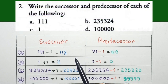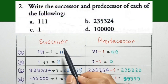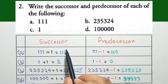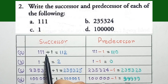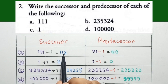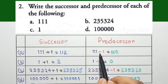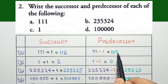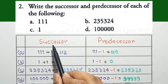Question 2: Write the successor and predecessor of each of the following. For the successor, we just add plus 1 to the number and that total value will be the successor. And for the predecessor, we subtract minus 1, and the resulting value is known as the predecessor.